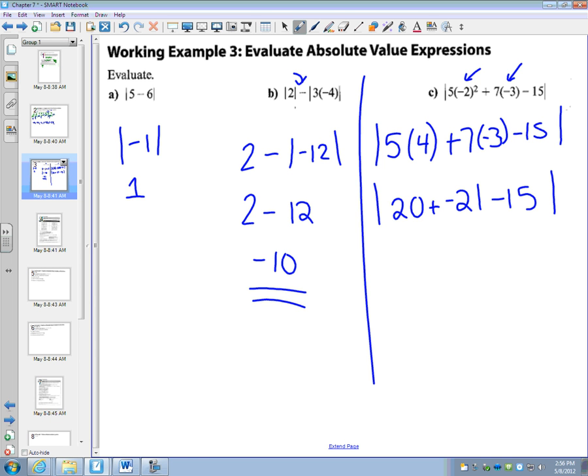I have 20 minus 21 is negative 1. Minus 15 would be negative 16. The absolute value of negative 16 is 16.